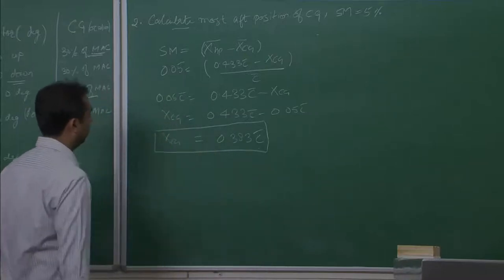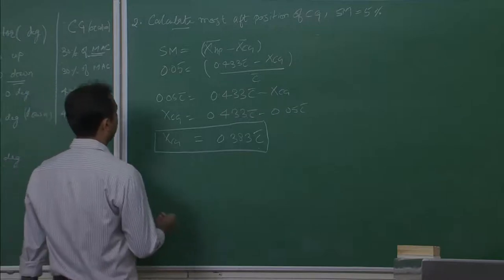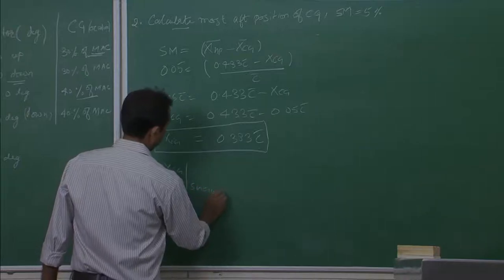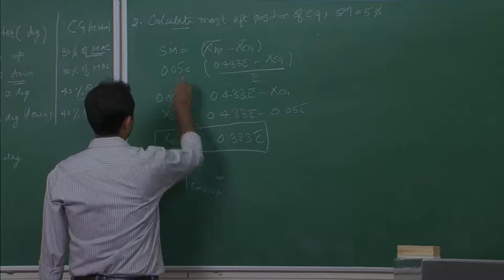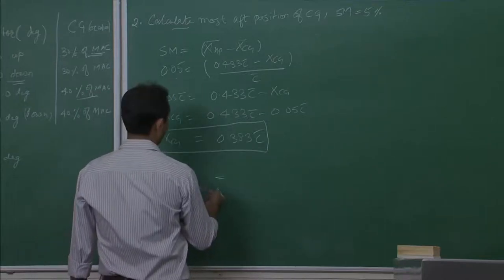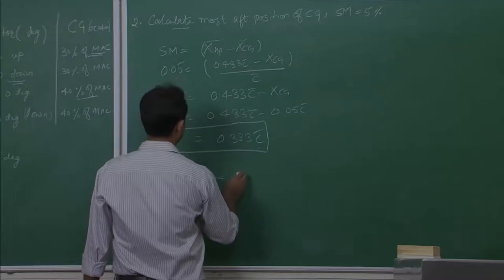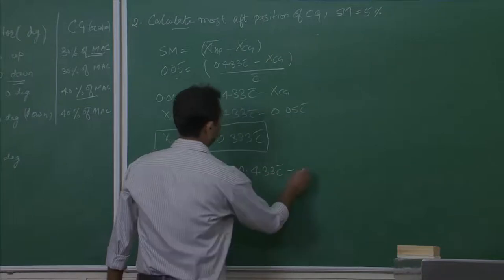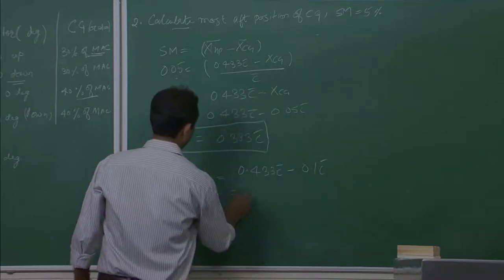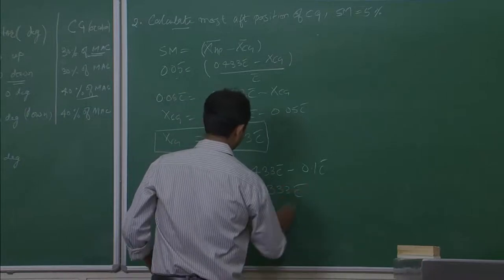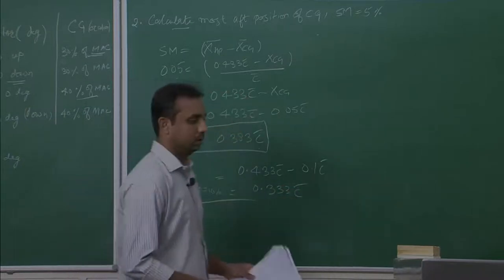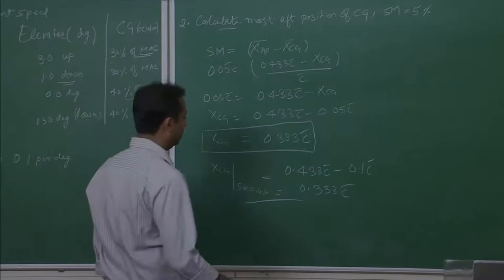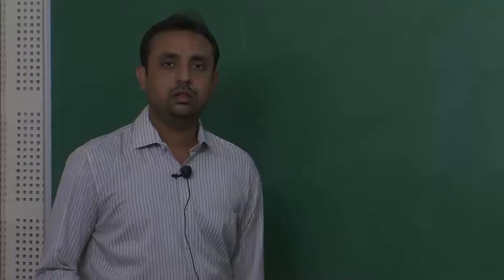For instance, for a static margin of 10%, substitute 0.1 instead of 0.05: xCG = 0.433C̄ − 0.1C̄ = 0.333C̄. This concludes the first problem. Now we will look at the second problem and see what information we can extract from it.